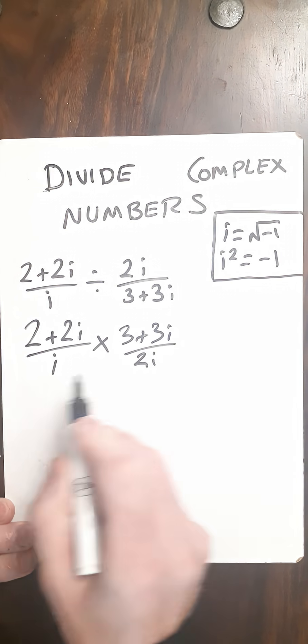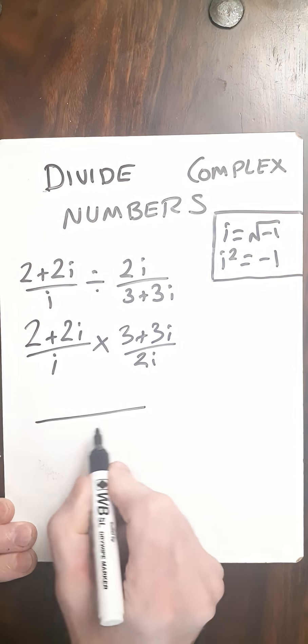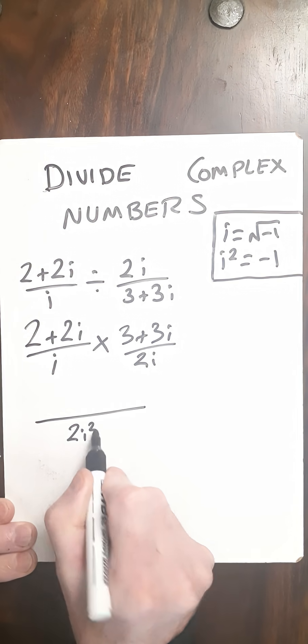And now we can just multiply numerators and denominators. Denominator is straightforward, it's 2i squared.